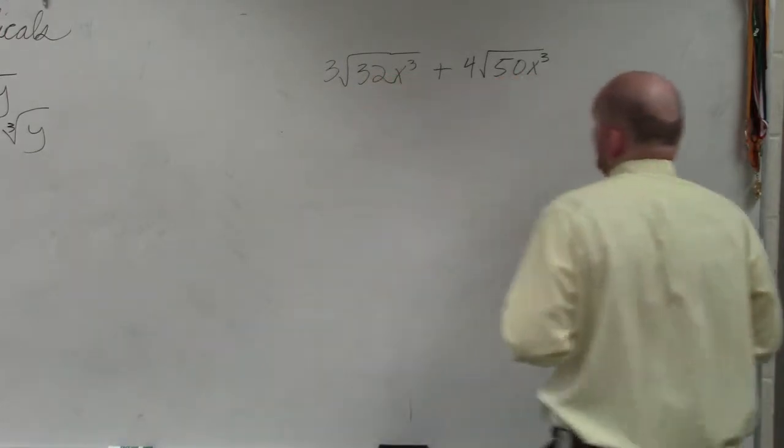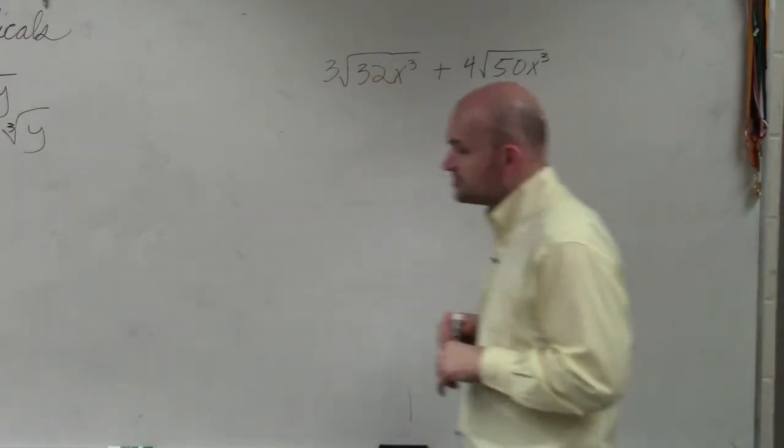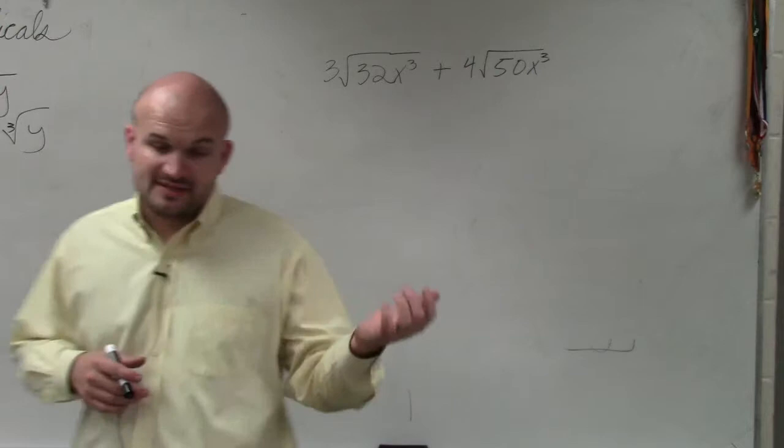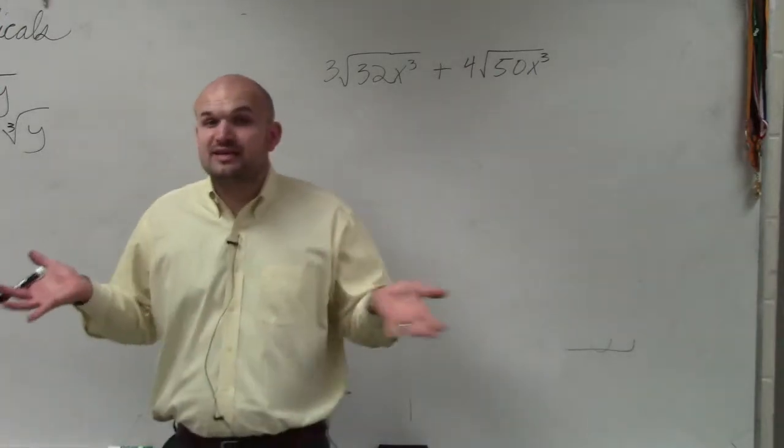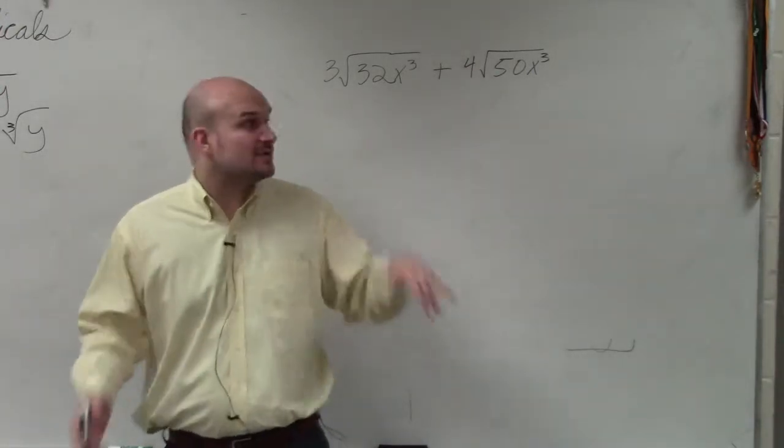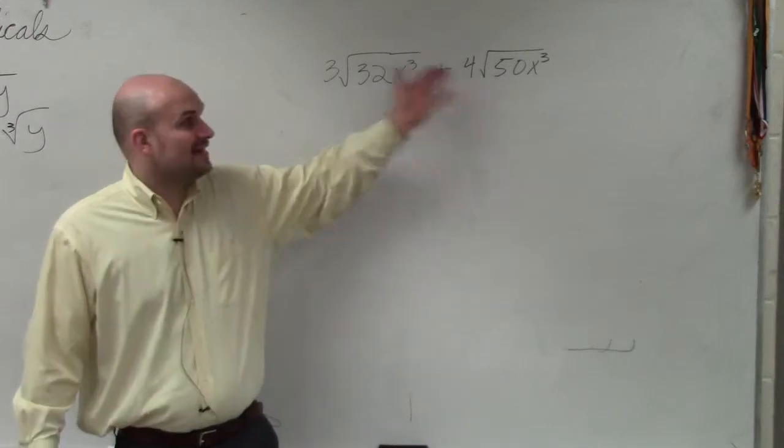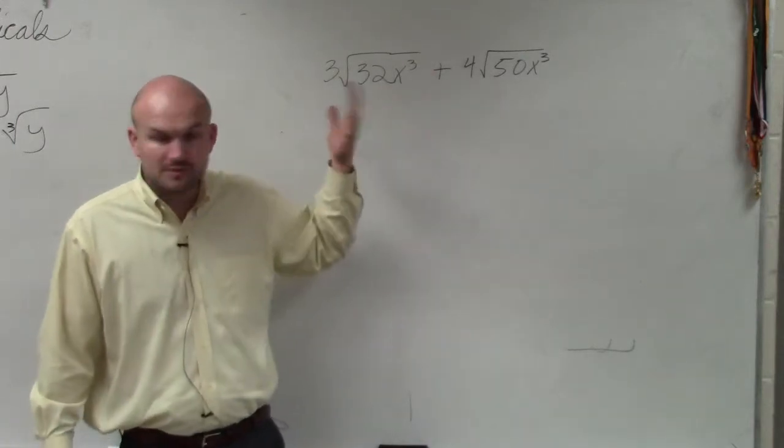So here I have 3 times the square root of 32x cubed plus 4 times the square root of 50x cubed. The main important thing is simplifying. Whenever you have to add and subtract, we have to have the same radicand and they have to have the same root, which they both have - the square root. So that's good.